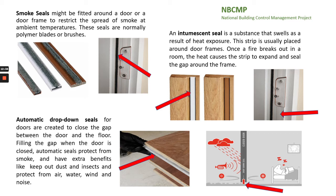A fire door can also be fitted with an automatic drop-down seal. Automatic drop-down seals are designed to close the gap between the door and the floor. When the door is closed, they protect from smoke and have extra benefits like keeping out dust and insects and protecting from air, water, wind and noise.